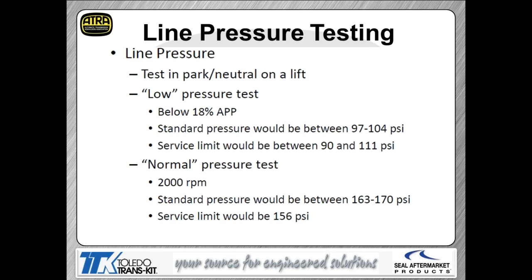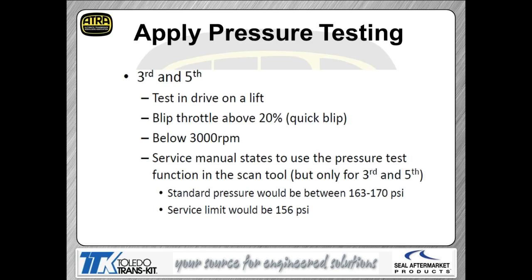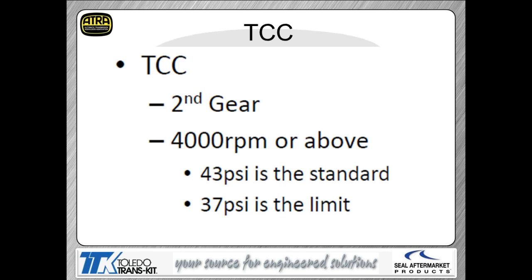For pressure specs, the key figure is the service limit — the minimum acceptable value. For first, second, fourth, and sixth gear clutches the service limit is 156 psi; do not go below that. Third and fifth gear clutches have the same pressure limit framework. For TCC, the minimum is 37 psi with a standard spec around 43 psi.